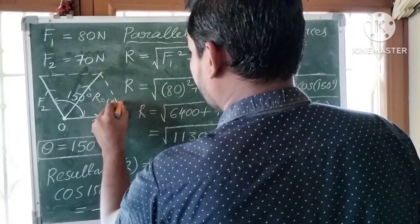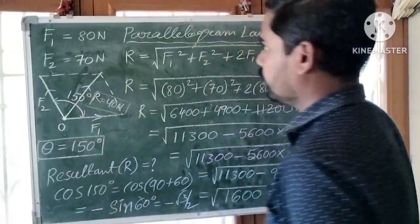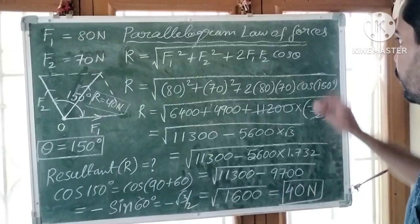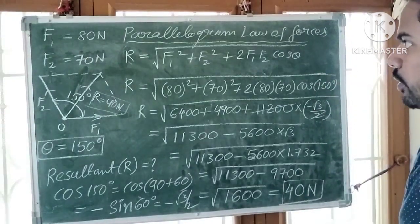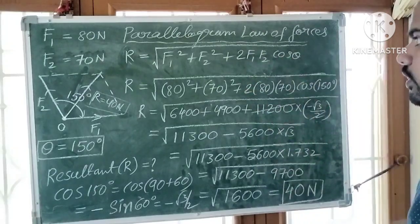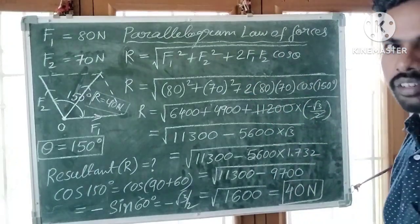Resultant value is 40 Newtons. Very simple problem. We need to remember this formula, resultant root over P square plus Q square plus 2PQ cos theta, where P and Q are forces.